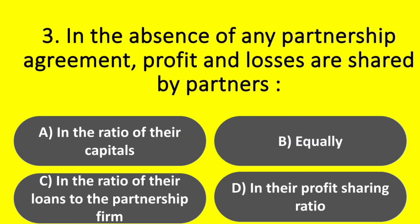Question. In the absence of any partnership agreement, profits and losses are shared by partners: Option A – In the ratio of their capitals. Option B – Equally. Option C – In the ratio of their loans to the partnership firm. Option D – In their profit-sharing ratio. Answer: Option B – Equally.